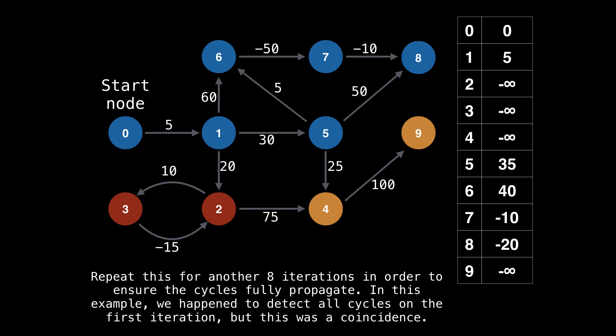So that's it for the first iteration. There are another eight iterations to perform. In this example, we happen to detect all cycles on the first iteration, but this was a coincidence. In general, you really need another eight iterations. This is because you want the negative cycle minus infinity values to propagate throughout the graph. The propagation is highly dependent on the order in which the edges are being processed, but having V minus 1 iterations ensures that this propagation occurs correctly.